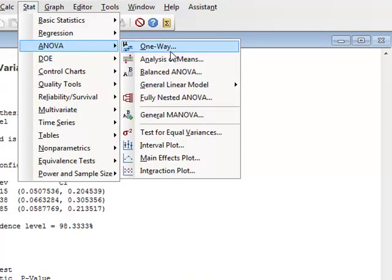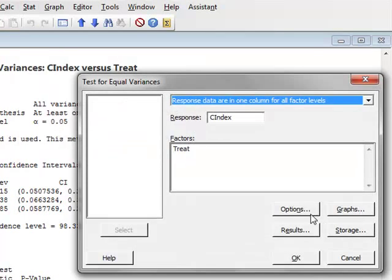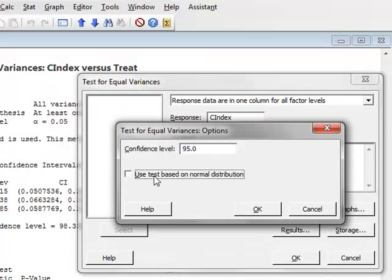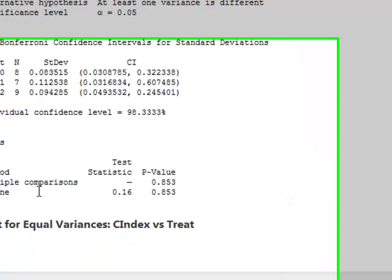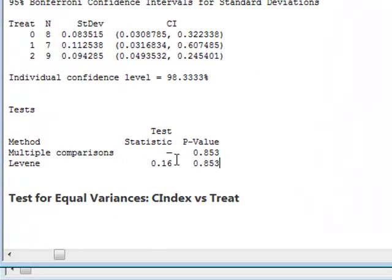If we had not opted for the normal distribution option, then the results would have produced Levene's test. And Levene's test would have given us a p-value of 0.853, in any case, giving the same conclusion that we can accept equality of variance.